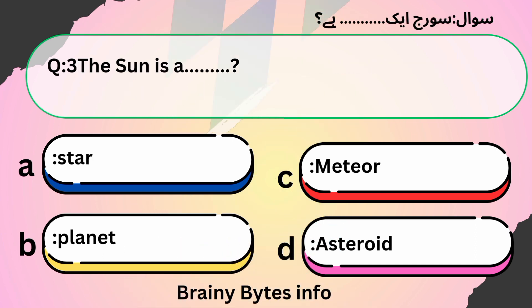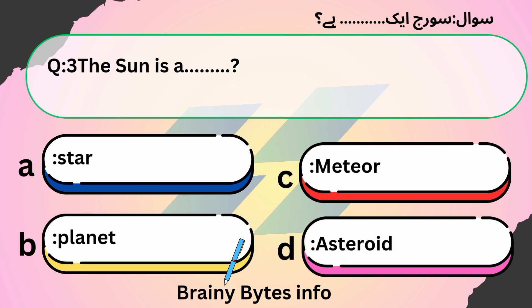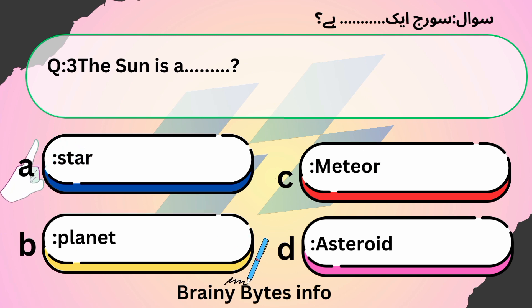The sun is: A. Star, B. Planet, C. Meteor, D. Asteroid. Answer: A. Star.